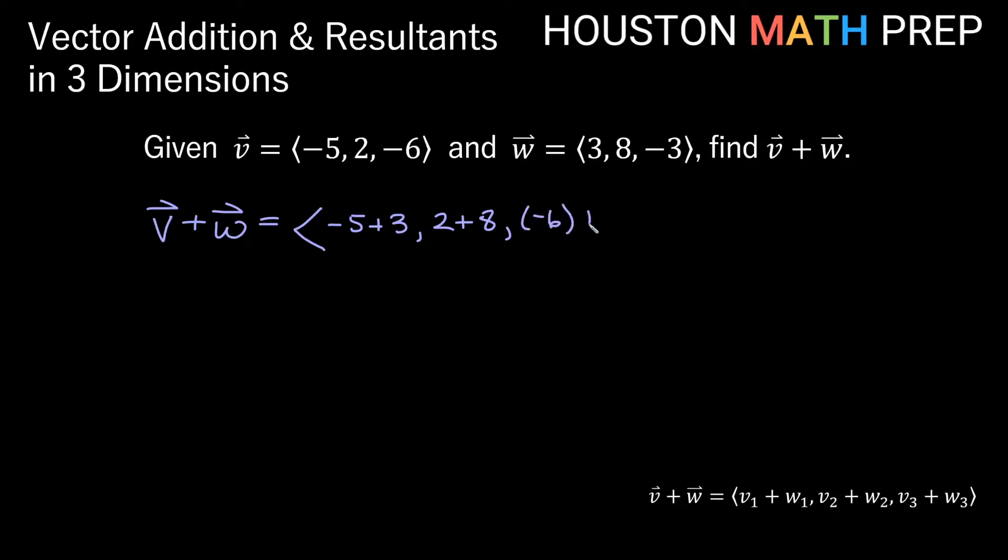You could probably have figured out what to do with this without us even telling you. Okay, so if we go ahead and finish this, then we'll get negative 2 for our X component. 2 plus 8 will give us 10 for the Y component. And here we'll get negative 9 for the Z component. So this is our resultant or, in other words, our sum of the vectors V and W.